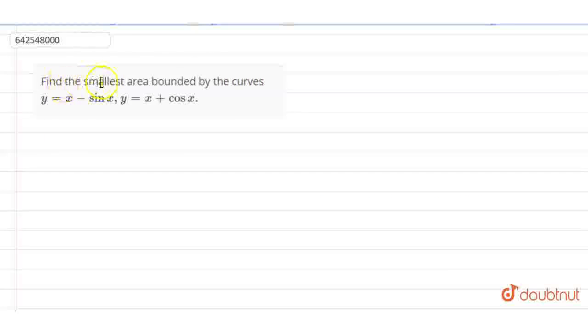Okay guys, let's start with this question. Find the smallest area bounded by the curve y equals x minus sin x and y equals x plus cos x.